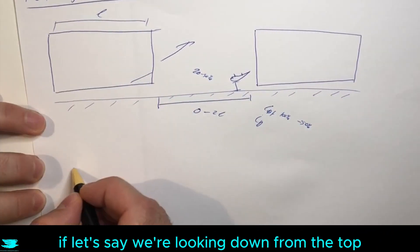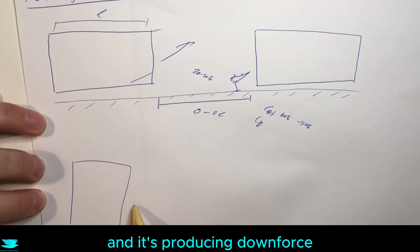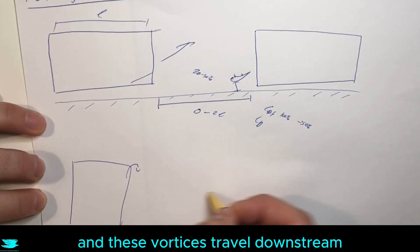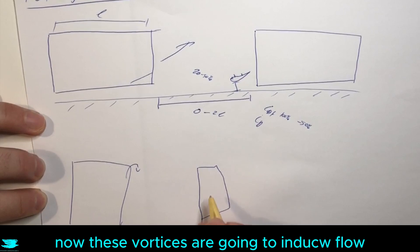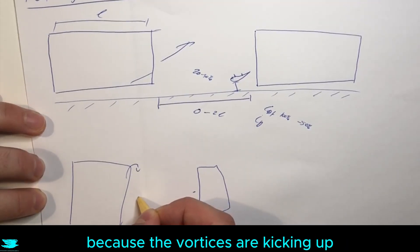Generally speaking, if we're looking down from the top and we have this car producing downforce, we then get vortices over it and these vortices travel downstream and hit this rear wing. Now these vortices are going to be inducing flow in different directions.